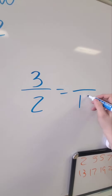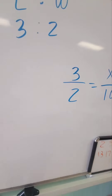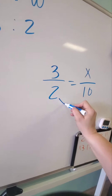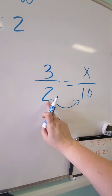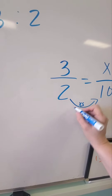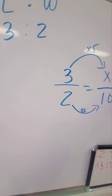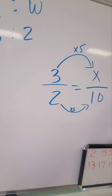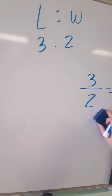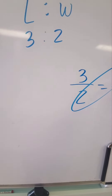So the width is the 2. I'm going to put the width that's 10 equal with the 2, and I don't know x — I don't know the length. So this is 2 times something equals 10. 2 times 5 is 10, so 3 times 5 is 15. So x equals 15. The other way to solve this, if you don't know how to do it this way, you can do this.